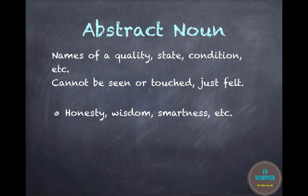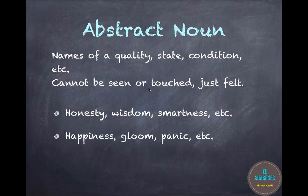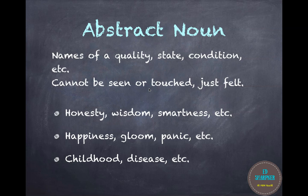For example, you cannot see or touch honesty, but you just know that a certain person is honest or not. States of mind like happiness, gloom, and panic are also abstract nouns. Some conditions like childhood, adulthood, and disease are also abstract nouns.